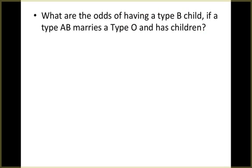The last question here asks, what are the odds of having a type B child if a type AB marries a type O and has children? So again, we have an AB and O, and we want to know odds of type B.